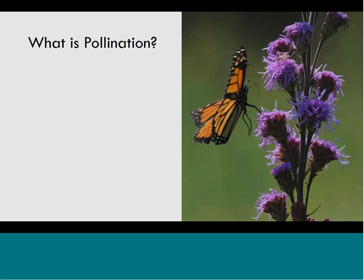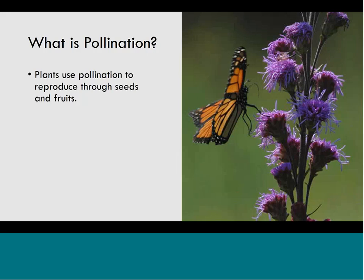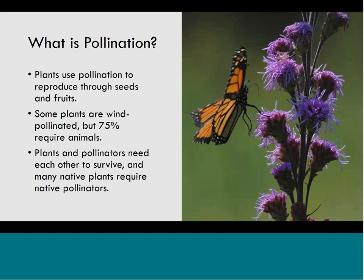You may be wondering: what is pollination? Basically, plants use pollination to reproduce through seeds and fruits. Some plants are wind pollinated, but about 75% require animals. Plants and pollinators need each other to survive, and many native plants require native pollinators and vice versa. There are many pollinators that have evolved to be dependent on one certain plant — if that plant was gone, the pollinator would be gone, and vice versa.